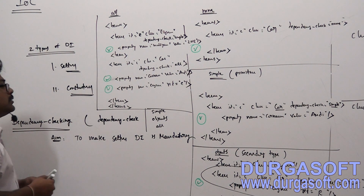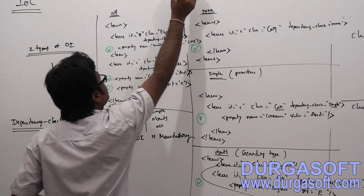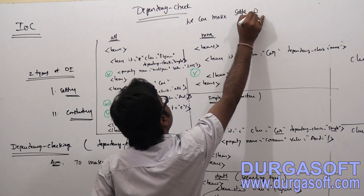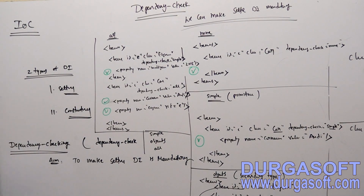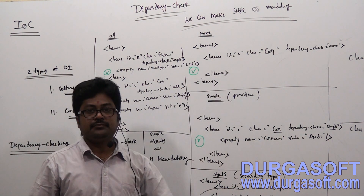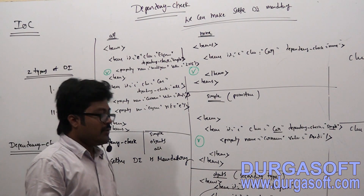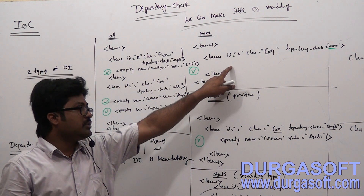The main aim of the dependency checking concept is to make setter dependency injection mandatory. By default, setter dependency injection is not mandatory — constructor dependency injection is mandatory. But to make setter dependency injection also mandatory, they provide this dependency-check attribute. The default value is none, which means it is not mandatory to call any setter method, and without calling any setter method you can create a car class object.